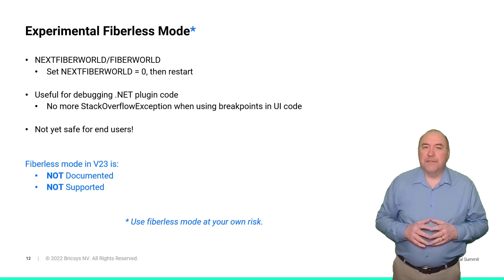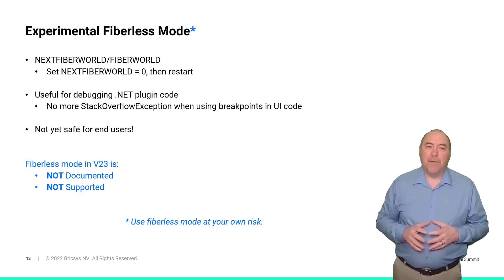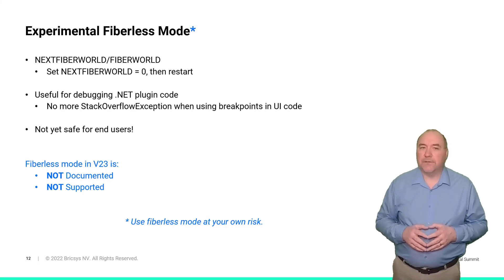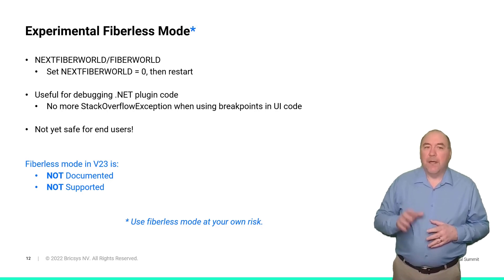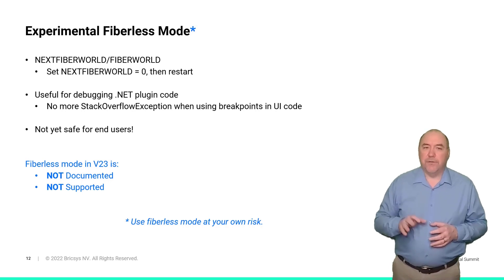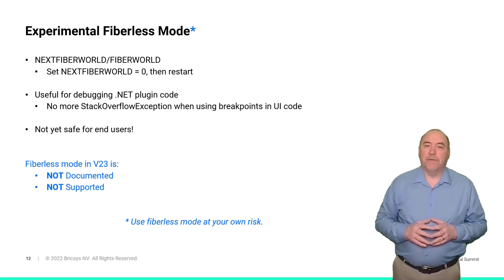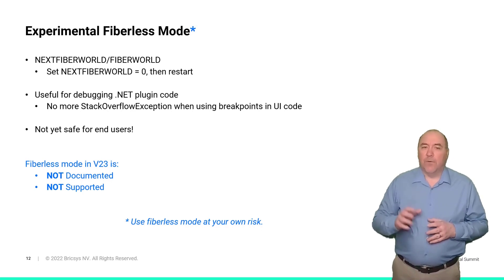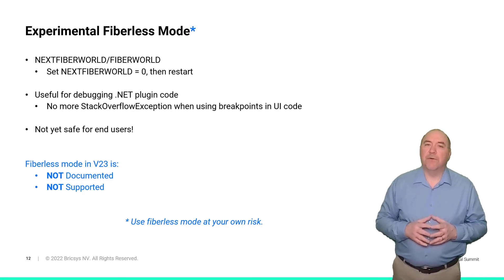Fibers are a form of lightweight threads that BricsCAD uses internally to separate execution contexts of its various subsystems. Microsoft's .NET common language runtime does not play well with Fibers, and this has become a pain point for .NET plugin developers. We've been working for a while now to eliminate Fibers from our architecture — we are not quite there yet. But I'm happy to announce we have made substantial progress — enough to include an experimental Fiberless mode in version 23. I want to caution you that Fiberless mode is not yet safe for end users, but we think it can already benefit .NET plugin developers, especially for debugging UI code. Although Fiberless mode is not documented and not supported, we do want to hear from you if you encounter any problems while using it.